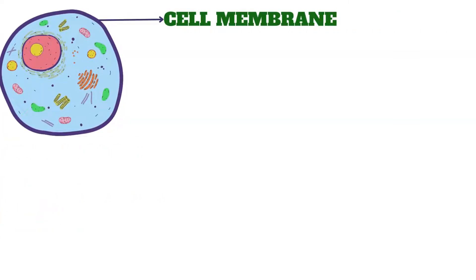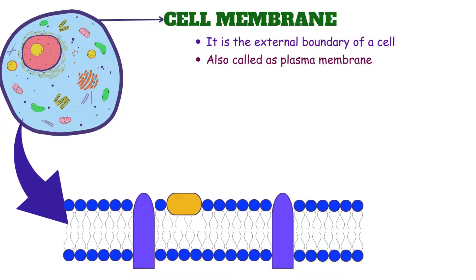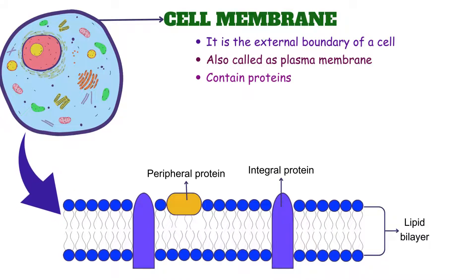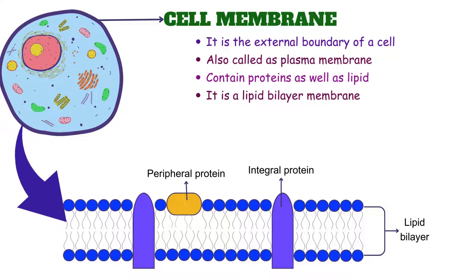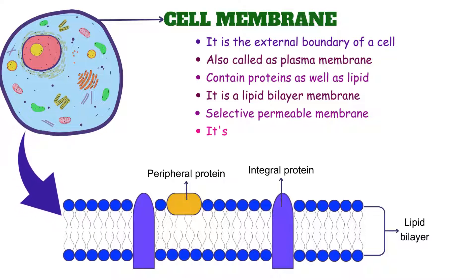Cell membrane is the external boundary of a cell and also called as the plasma membrane. If we zoom at the cell structure, cell membrane is composed of proteins as well as lipids. Cell membrane is a lipid bilayer membrane. Cell membrane is a selectively permeable membrane. That means it will only give permission to selective molecules. The function of the cell membrane is to support and to protect the cell from various external events.